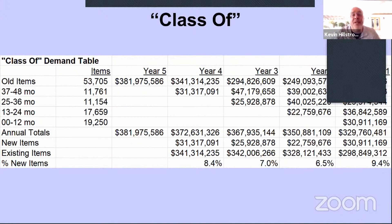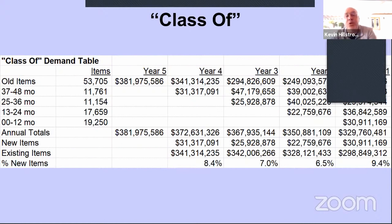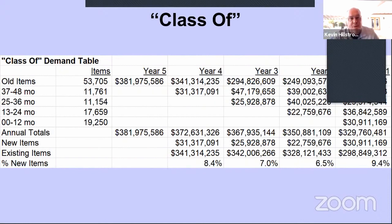This table is called a class-of table. I like to look at when merchandise was introduced. Items introduced 37 to 48 months ago did $31 million in their first year; items introduced 25 to 36 months ago generated $26 million; items introduced 13 to 24 months ago generated only $23 million. This business was hemorrhaging sales — and one big reason is that it was not introducing enough new items, or when it did introduce new items, like 13 to 24 months ago when they introduced 17,000 new items, those items performed terribly.